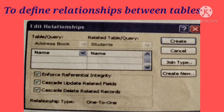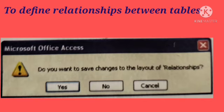Eighth, when you close the Relationships window, Access asks if you want to save the layout. Whether you save the layout or not, the relationships you have created are saved in the database. Now, students, the tables are related. If the Relationship toolbar is not visible, then select Database Tools tab, Relationships option in the Show Hide group.